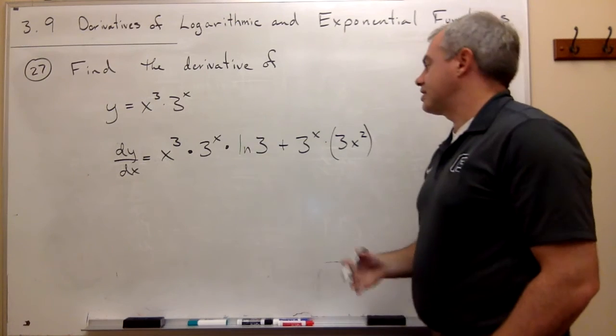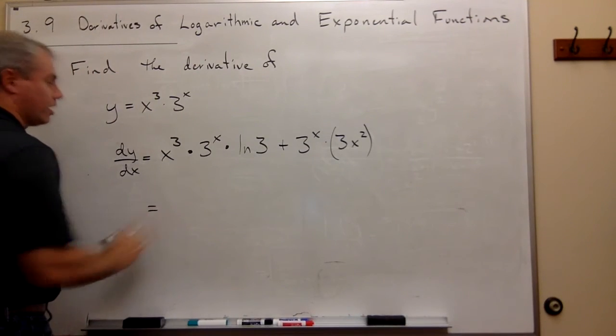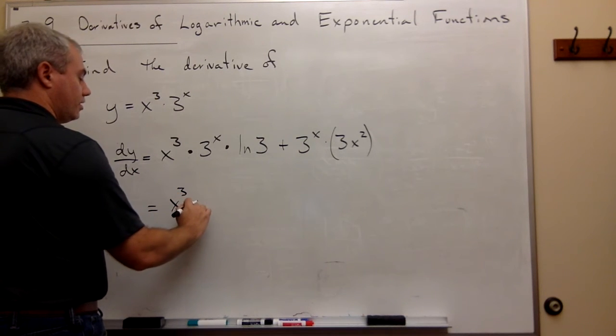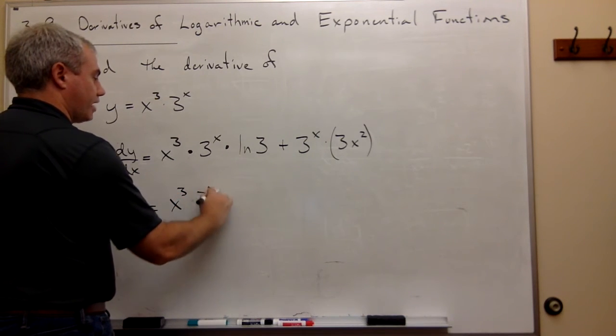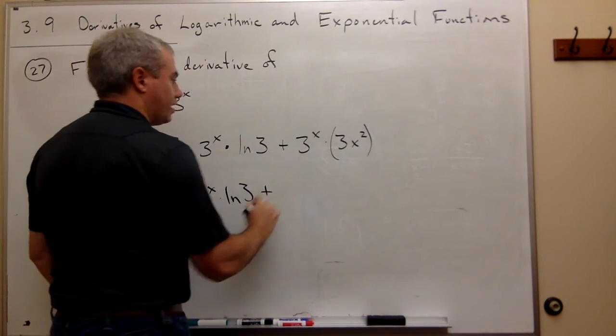Now, if we wanted to simplify this a little bit, I suppose that we could. There's not a lot to do here. So this is just x cubed times 3 to the x times ln 3, and the second piece is plus.